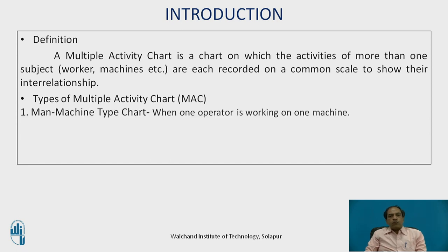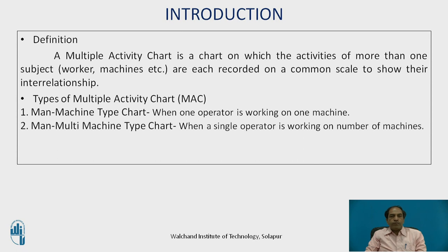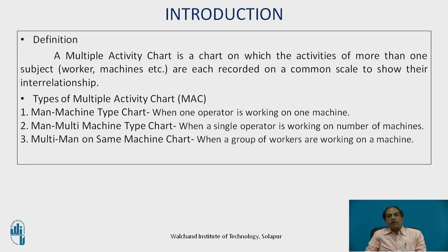There are different types of multiple activity charts. The first is the man-machine type chart, where one operator works on one machine — a one-to-one correspondence — such as a lathe or conventional drilling machine. Another type is the man-multi-machine chart, where a single operator works on multiple machines, such as when an automat is used and the operator can run two or three machines simultaneously, as in a radial drilling machine arrangement.